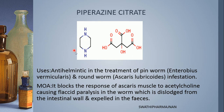What is pyrazine? A six-membered ring containing two nitrogens at first and fourth positions is called pyrazine. If it contains double bonds we call it pyrazine; if it is completely saturated we call it piperazine. Citrate is attached with piperazine — that is piperazine citrate.